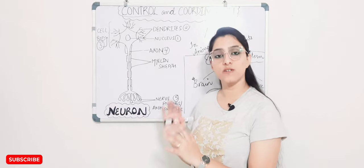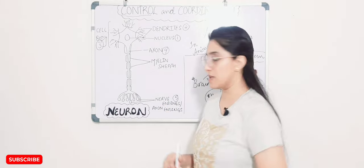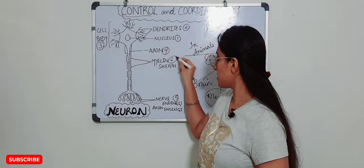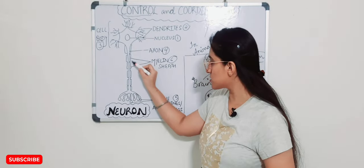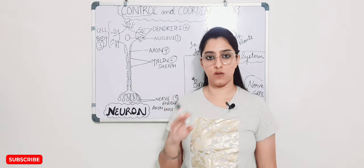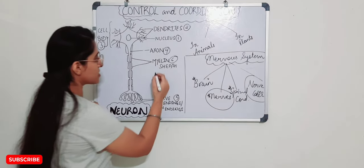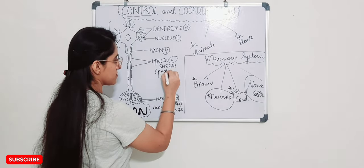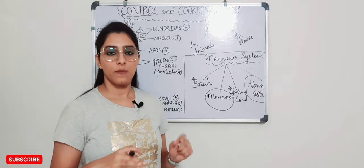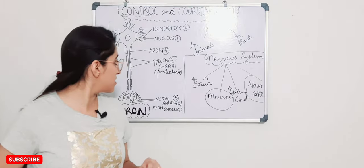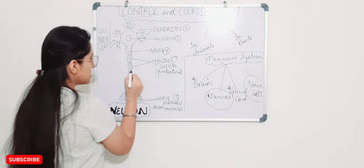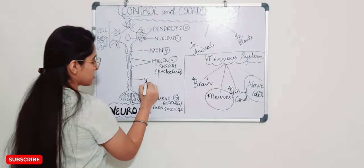Next we have the myelin sheath — the small layers you see covering the axon. Myelin sheath is protective in function; it protects the axon. However, it has small gaps in between known as nodes of Ranvier. If you refer to the NCERT textbook, myelin sheath and nodes of Ranvier are not explained much, but if you refer to an ICSE curriculum textbook, you may encounter these terms.